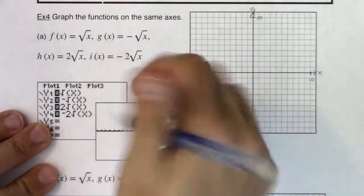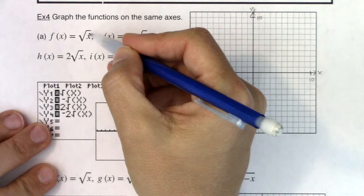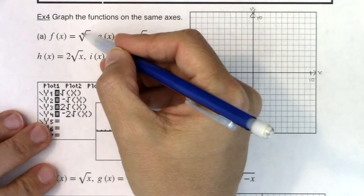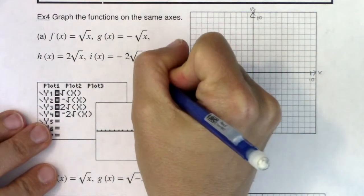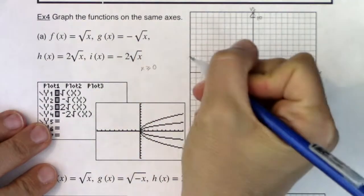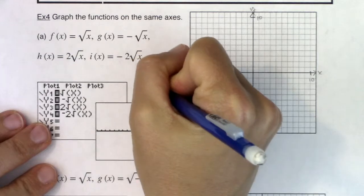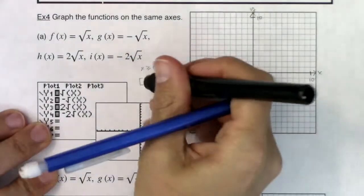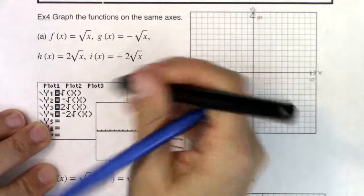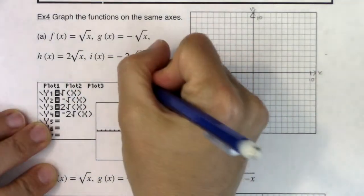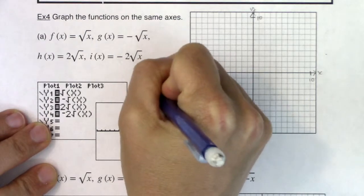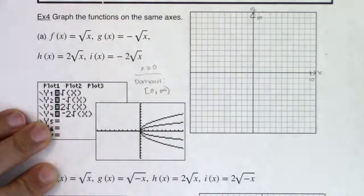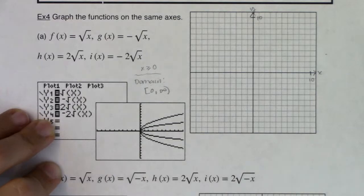In terms of domains, we're going to have domain issues because we have an even indexed radical — this is a square root — and for all of these, the radicands are x. So I need my radicand to be greater than or equal to 0. The domain is all numbers between 0 and infinity, and we include 0 because we can take the square root of 0.